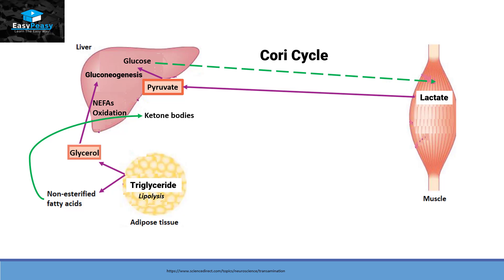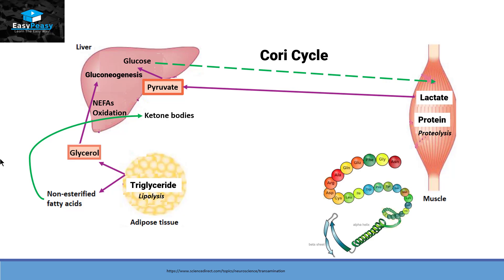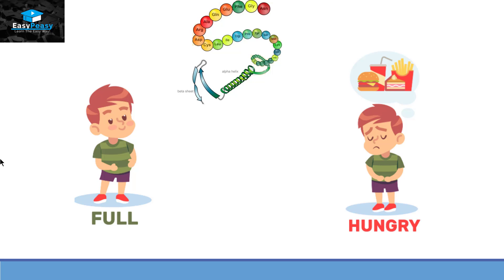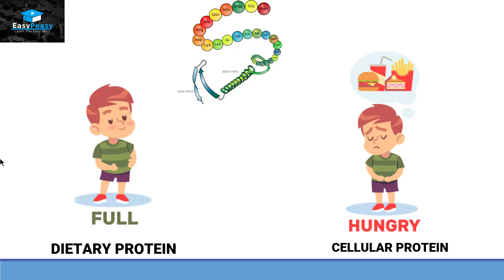The third and last common non-carbohydrate substrate is proteins. Proteins can degrade into amino acids through proteolysis. This happens in two conditions: when you have a full meal, dietary proteins are used in gluconeogenesis; and when we are hungry or starving, this becomes the last option for the body to generate glucose, using cellular proteins from our own body.